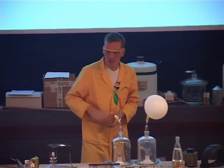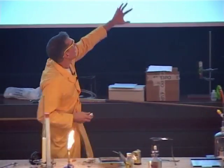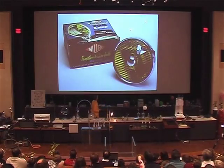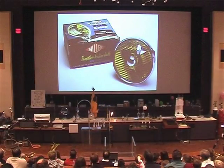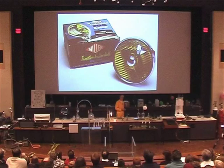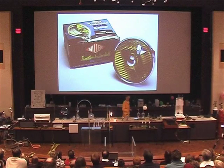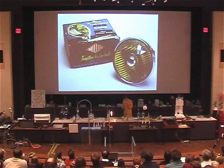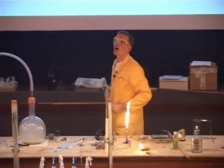These halogens are used in bulbs. The early ones used to use iodine — this is actually called a tungsten-iodine bulb — but later bromine came to be used instead. So most of the halogen lamps you buy now actually contain bromine.